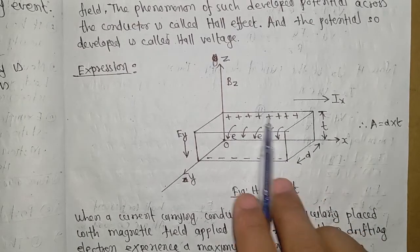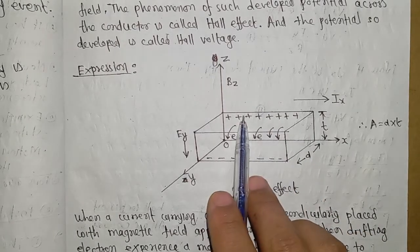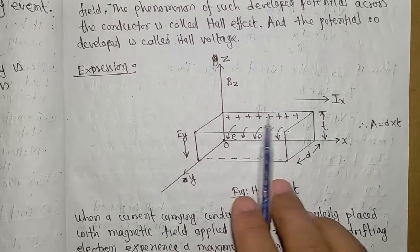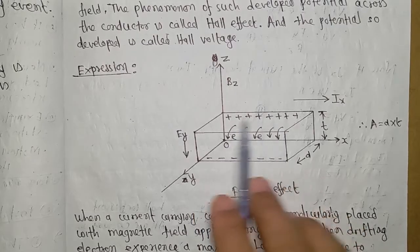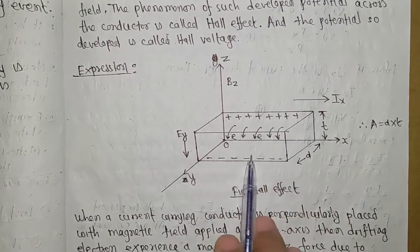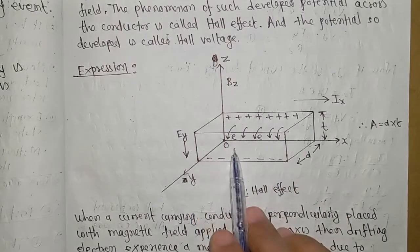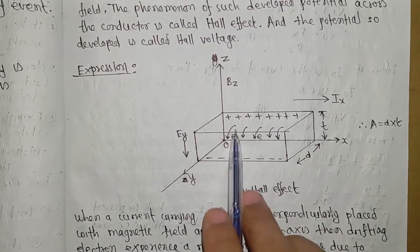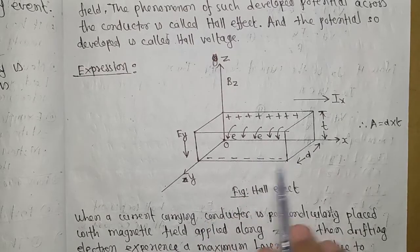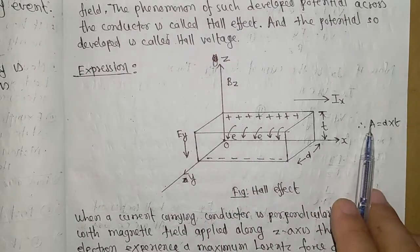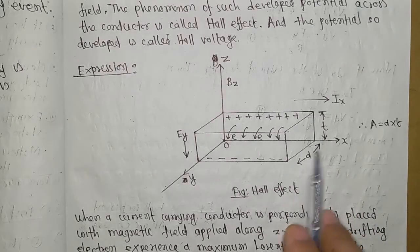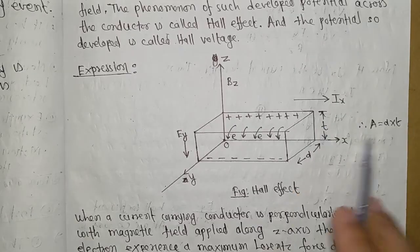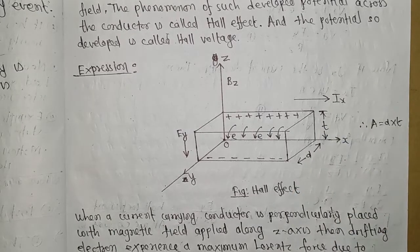When external magnetic field is applied to the current carrying conductor, electrons move from the upper surface to the lower surface. This creates positive charge at the top and negative charge at the bottom. The area of the conductor is d times t, which is width times thickness.